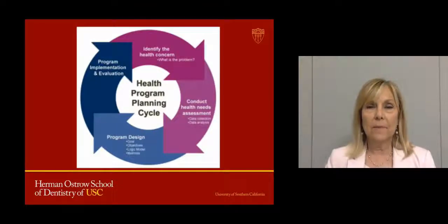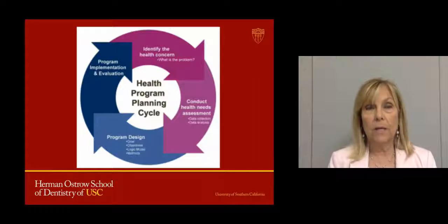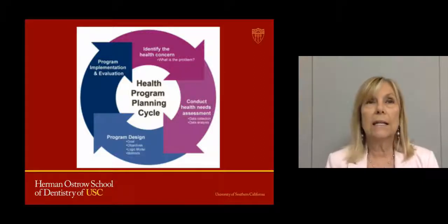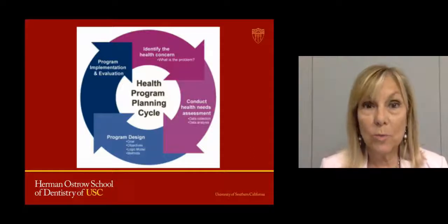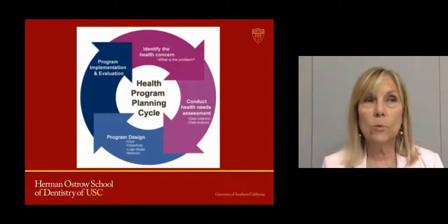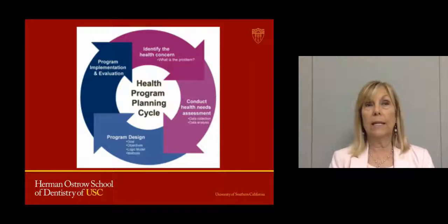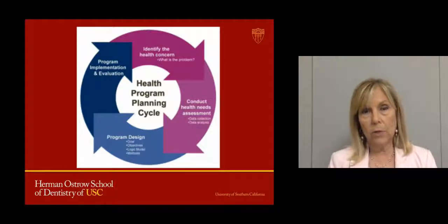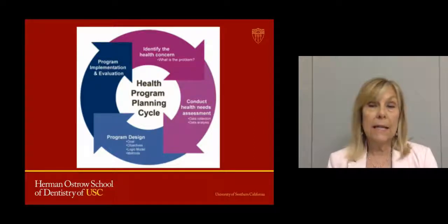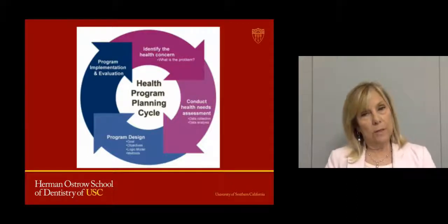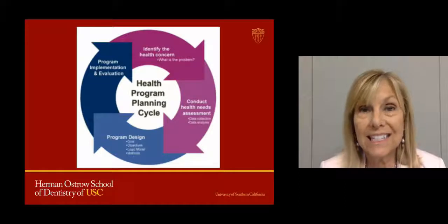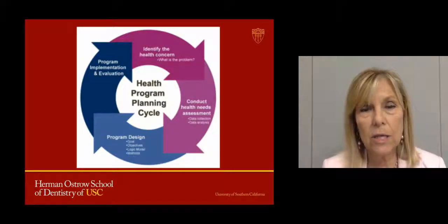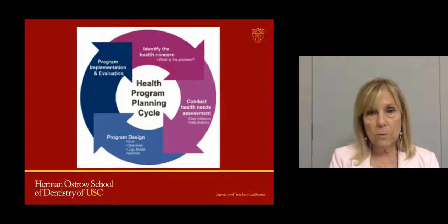Welcome back. Now we're getting into the overview of the health program planning cycle. Think of it as your elevator speech — if someone asks what health program planning is about, you have 30 seconds to explain. The first step is identifying a health concern: what's the problem in the community you're creating the program for? The second step is conducting a health needs assessment. The textbook breaks it down into six steps, while this graphic shows four, but let's look at both.